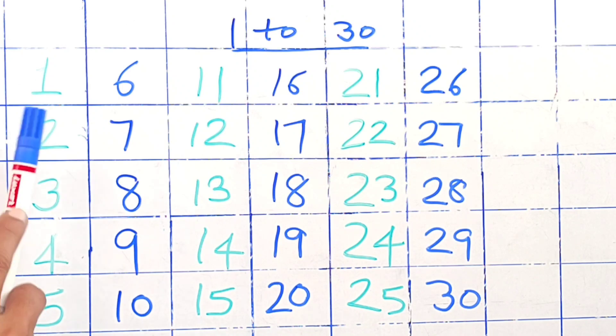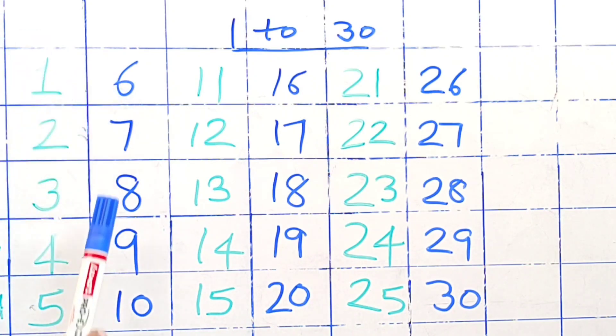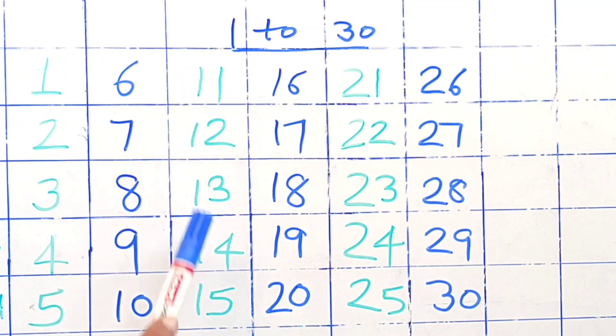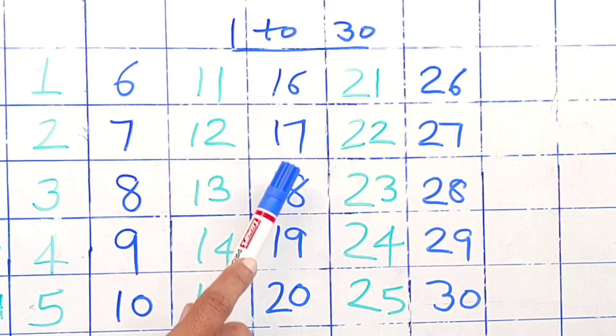1, 2, 3, 4, 5, 6, 7, 8, 9, 10, 11, 12, 13, 14, 15, 16, 17.